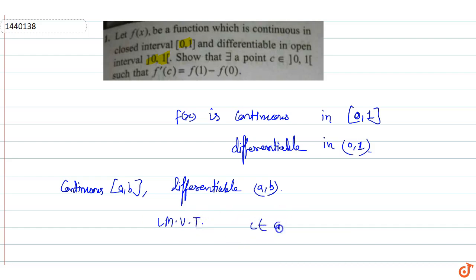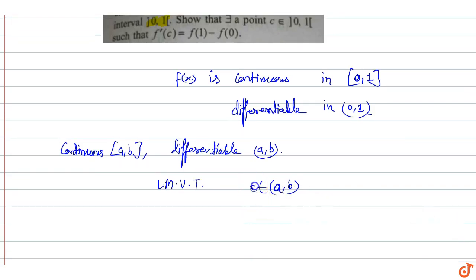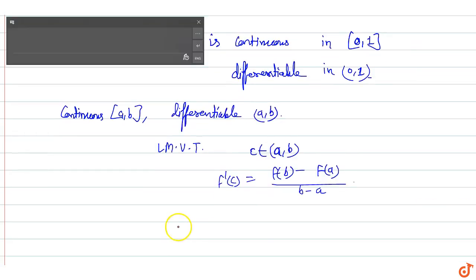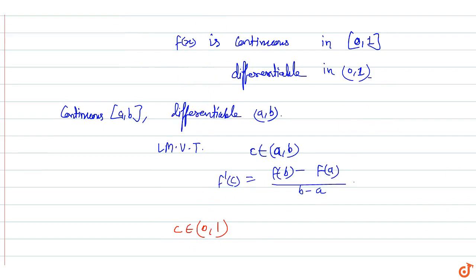...there exists a value c which lies in between a and b where f'(c) is equal to f(b) minus f(a) upon b minus a. So this function f(x) is continuous in [a,b] and differentiable in open interval (0,1), then a point c which belongs to the open interval (0,1) where f'(c) is equal to...